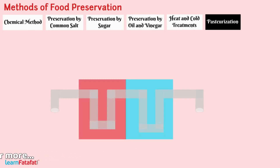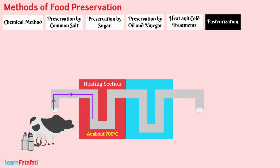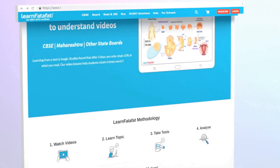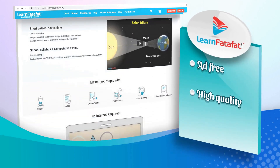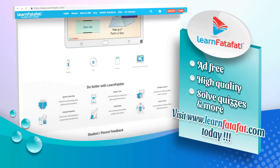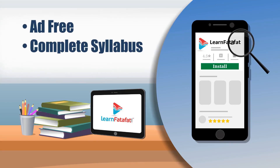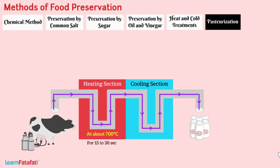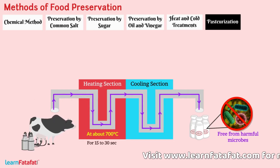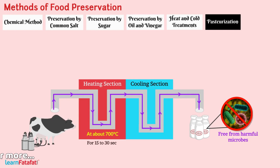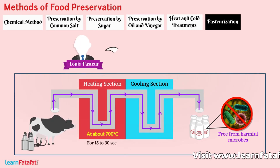Pasteurization. Milk is heated at about 70 degrees Celsius for 15 to 30 seconds and then suddenly chilled and stored. Milk becomes free from harmful microbes. Since this method was discovered by Louis Pasteur, the method of preservation is called pasteurization.